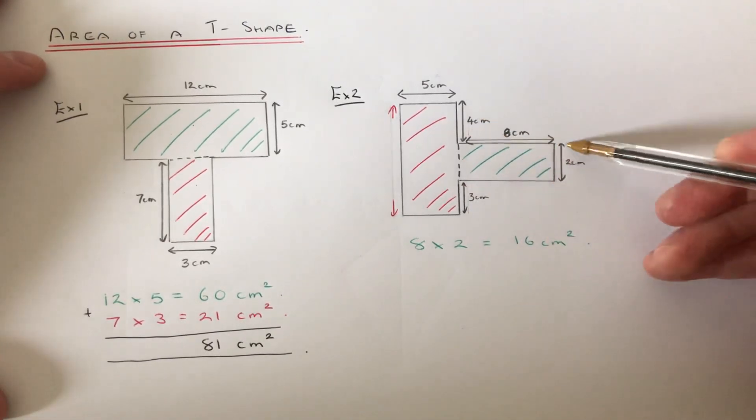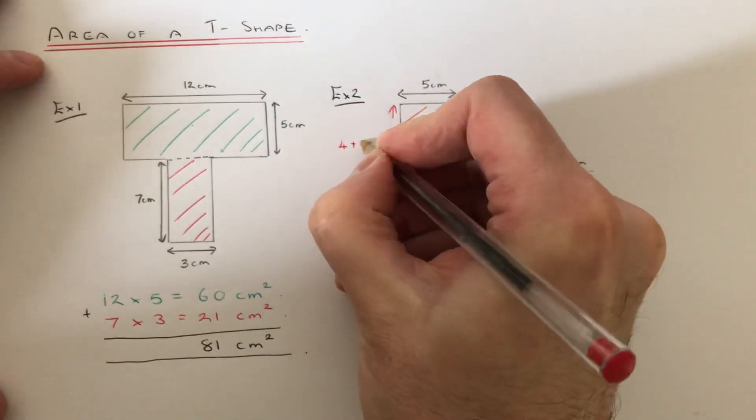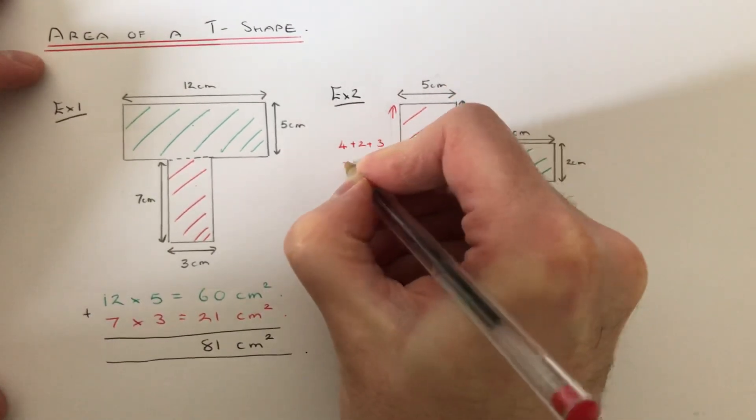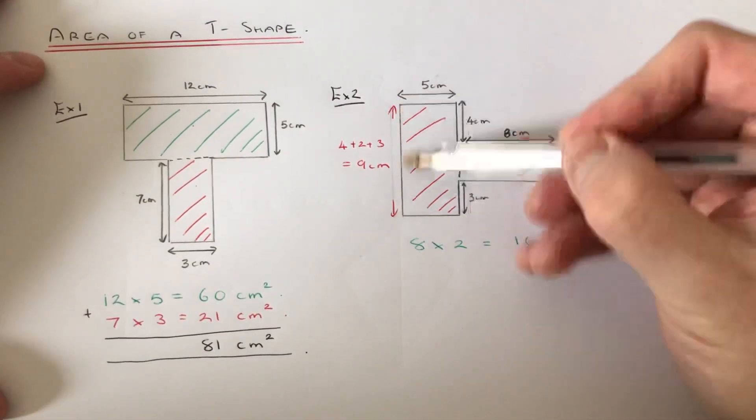So we need to just add the 4, the 2 and the 3 together. So that will give me 9cm. So the length of the red rectangle is 9.